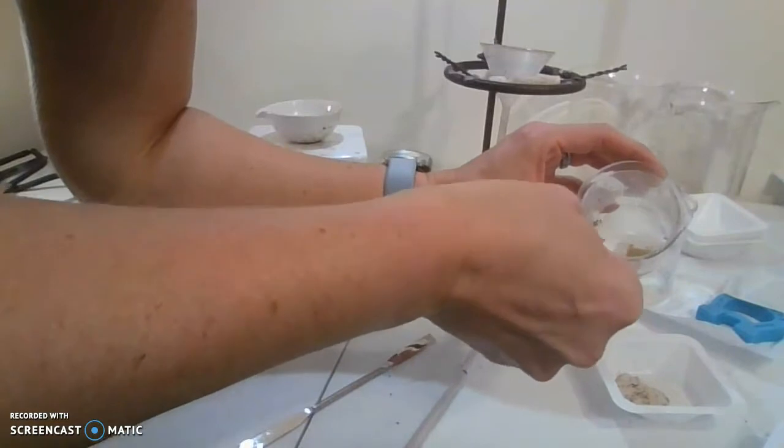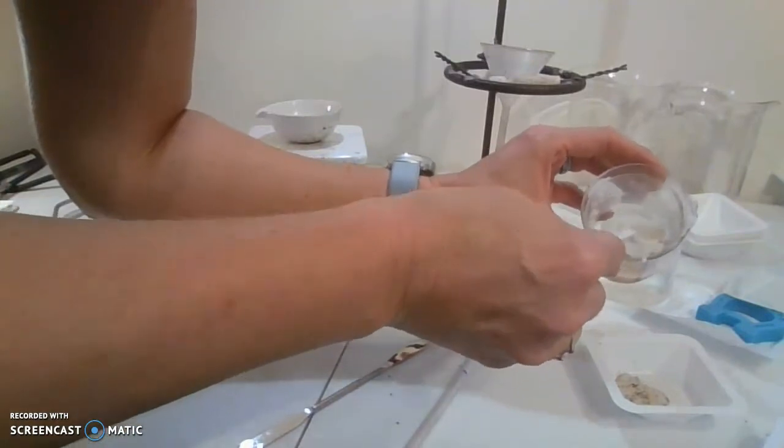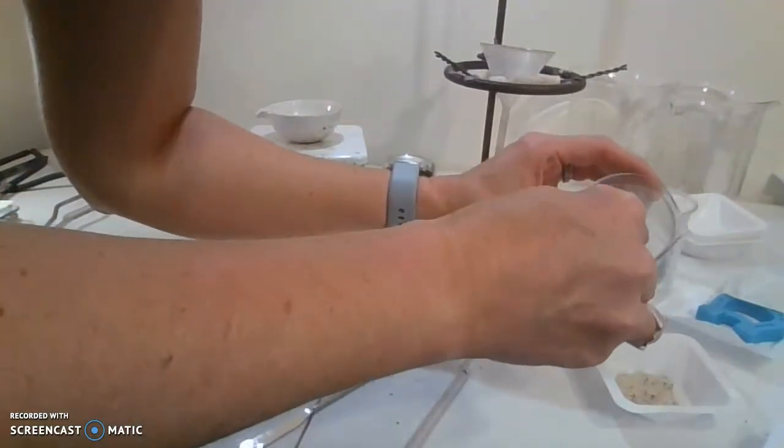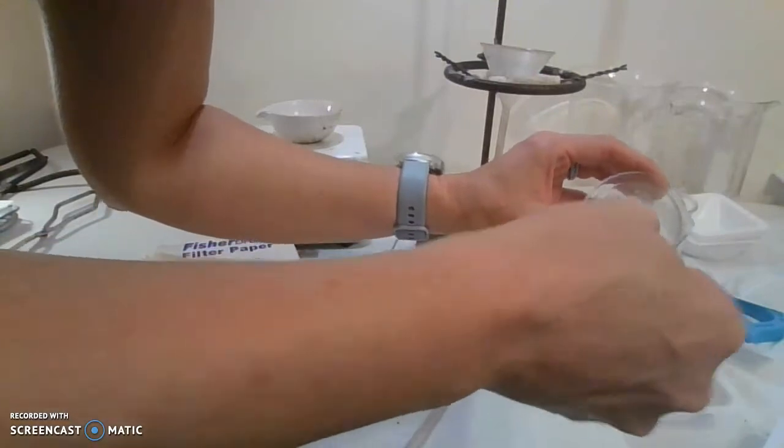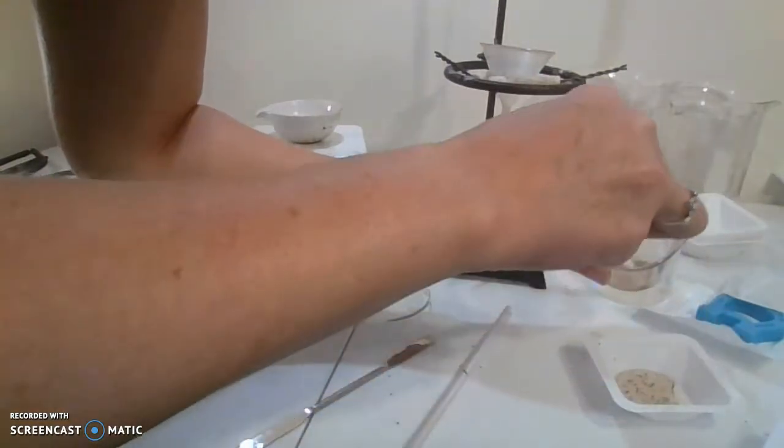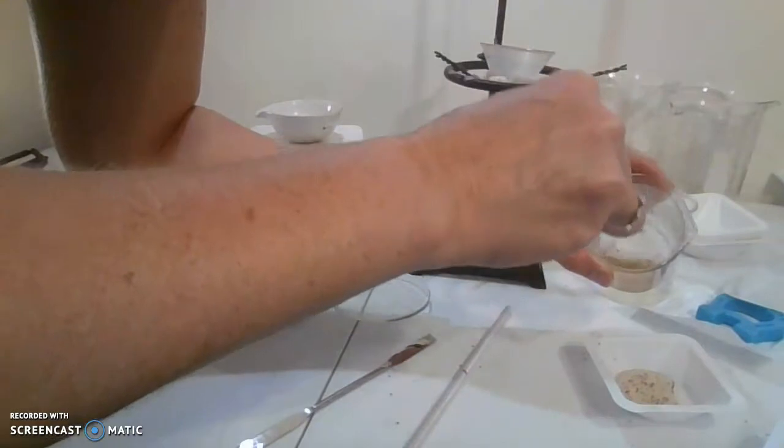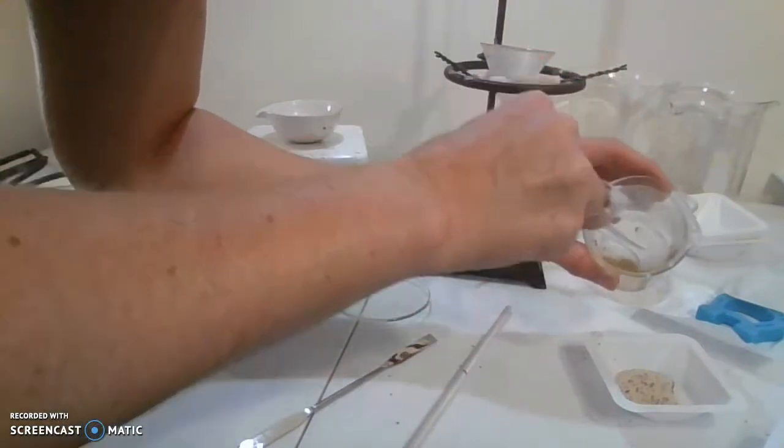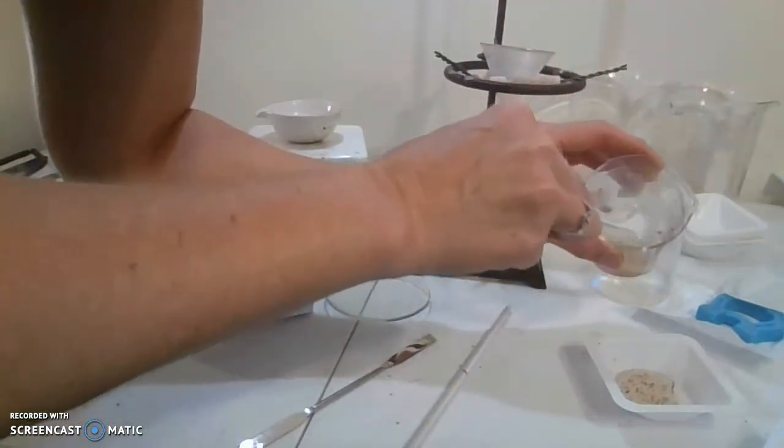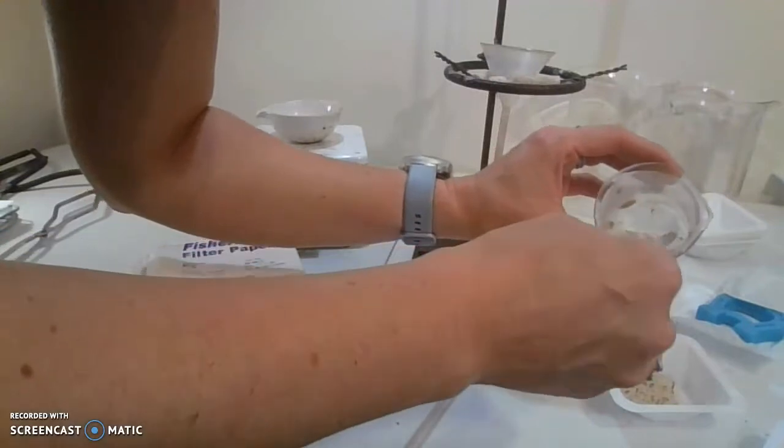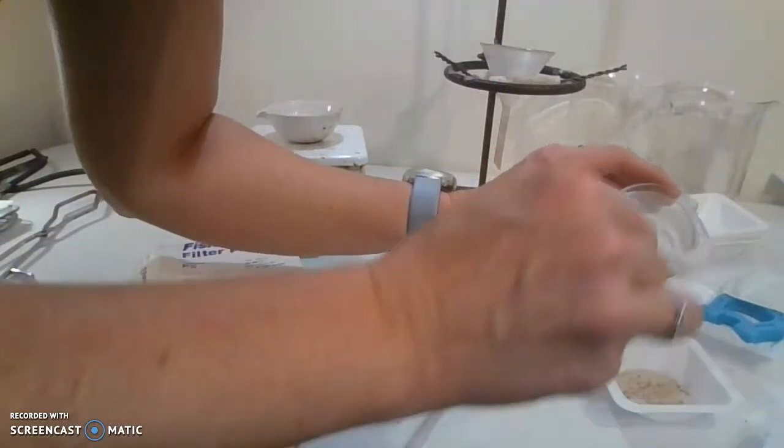So we're going to pick out as many of the poppy seeds as possible using my spoon. There's still a couple that kind of sunk, so it's not the best option for making sure that you have a pure separation.